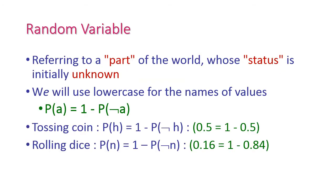Next are random variables. A random variable refers to a part of the world that may take any random value whose initial status is unknown. We use lowercase letters for the names of values. If A is a random variable, then P(A) = 1 − P(¬A), or equivalently, P(A) + P(¬A) = 1.